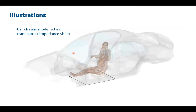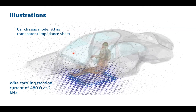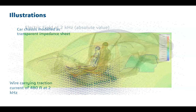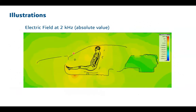You have a car chassis model simulated as an impedance sheet. Below the passenger model, there is a wire carrying a traction current of 480 amperes at a 2 kHz signal. You simulate this model with the car and the voxel family model in place, then create a loop carrying that traction current. Because of the extremely high currents, magnetic fields are generated that interact with the human body, and you can see the penetration of electromagnetic fields into the passenger.